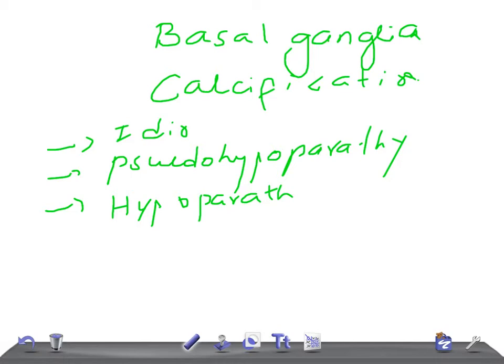There is a syndrome known as Fahr syndrome. It is a genetic disease. In this, the patient will have clumsiness, fatigability, unsteady gait, slurred speech, dysphagia, involuntary movements of the muscles or cramping, and seizures. This is due to the deposition of calcium in the basal ganglia, especially in the lenticular nucleus and particularly the globus pallidus.